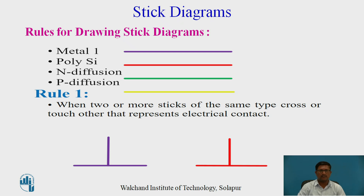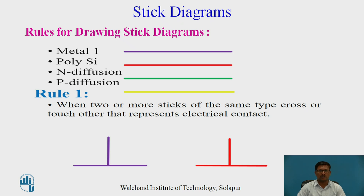For drawing stick diagrams: metal 1 or metal uses blue color; polysilicon used for the gate uses orange or red color; N-diffusion uses green color; and P-diffusion uses yellow color. There are four rules for drawing the stick diagram for CMOS logic.